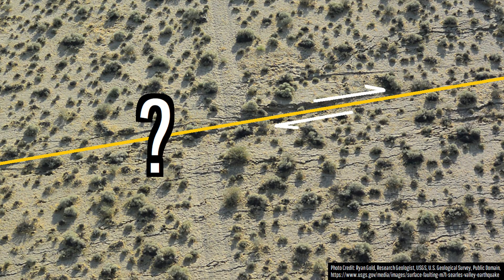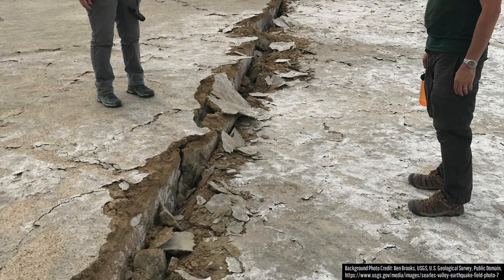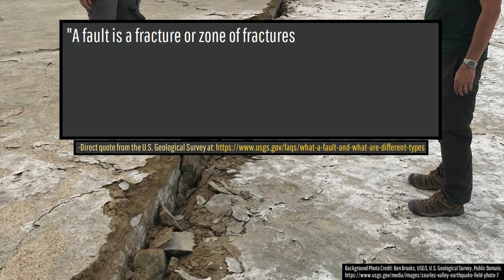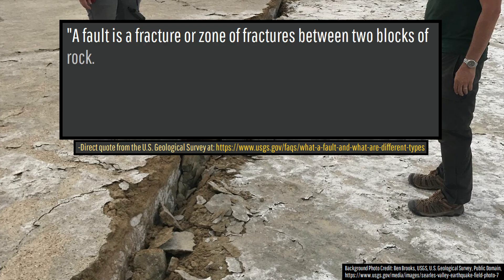Fault lines, what are they? Well, per a direct quote from the US Geological Survey, a fault is a fracture or zone of fractures between two blocks of rock.